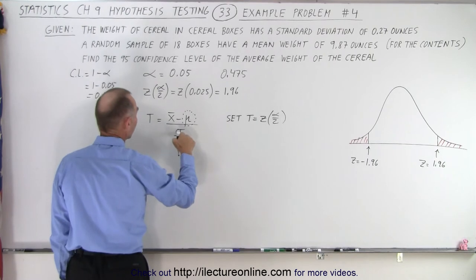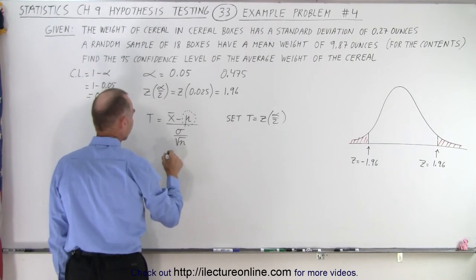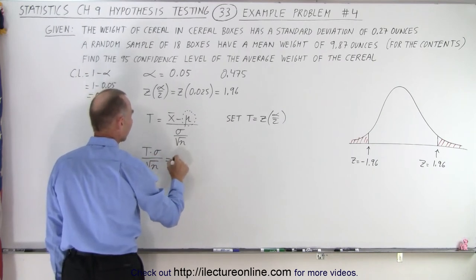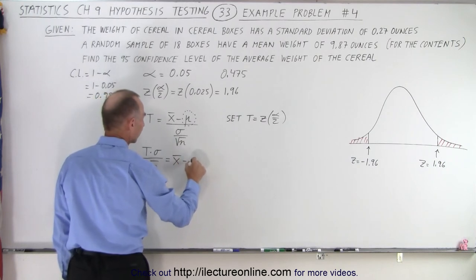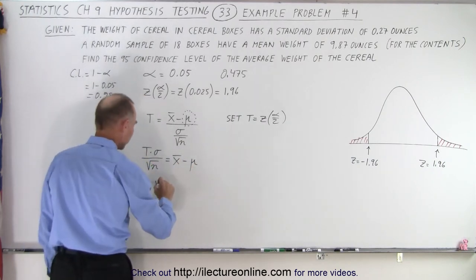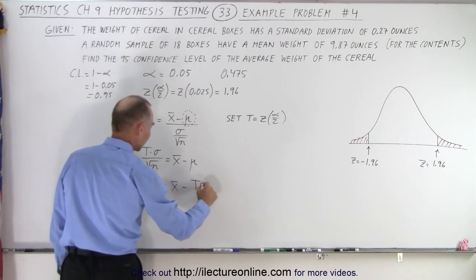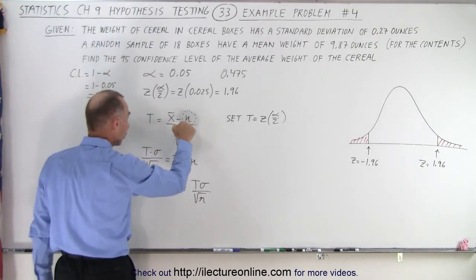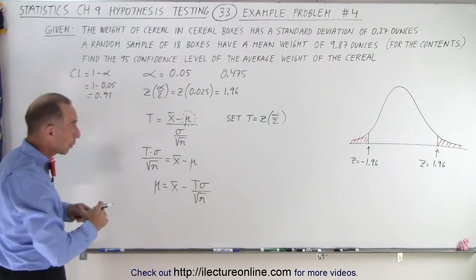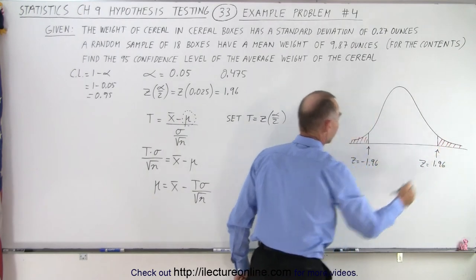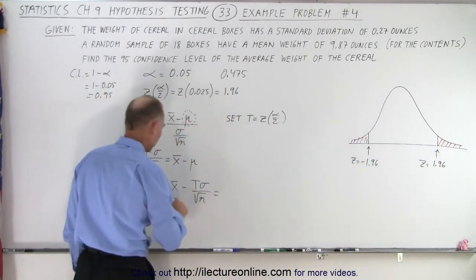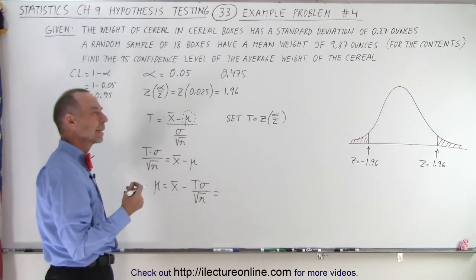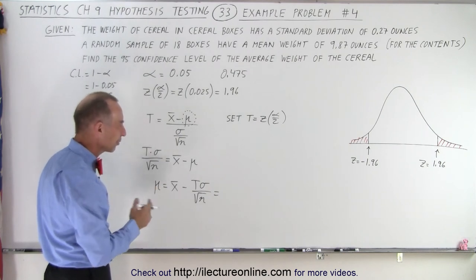We're going to solve this equation for the mean of the population. We bring the denominator across, so the test statistic times the standard deviation divided by the square root of the sample size equals the sample mean minus the population mean. Solving for that, the population mean equals the sample mean minus the test statistic times the standard deviation divided by the square root of the sample size. We want the range at the 95% confidence level, so we'll use plus or minus — doing one side first, then the other.